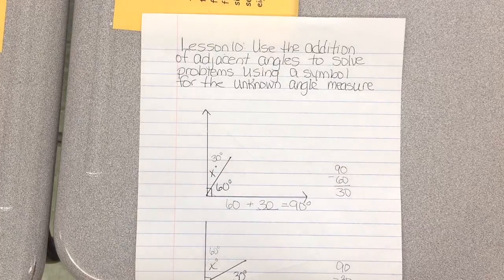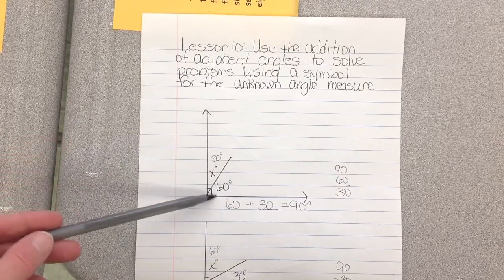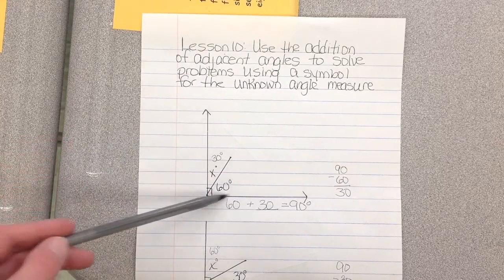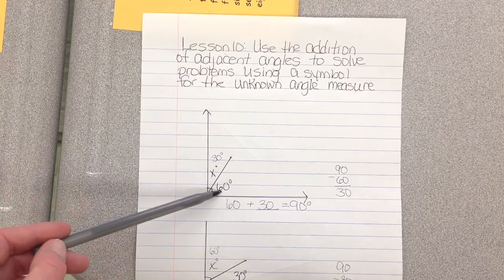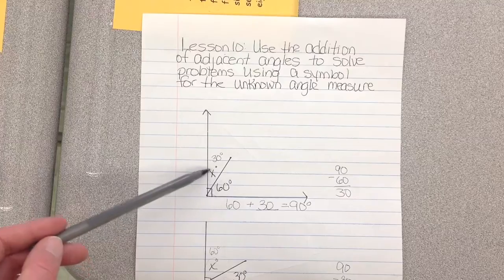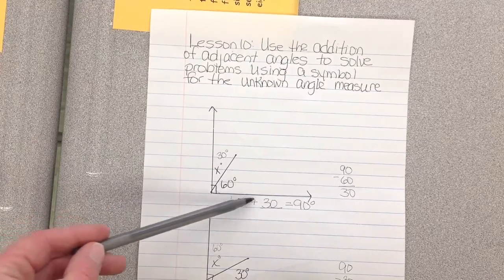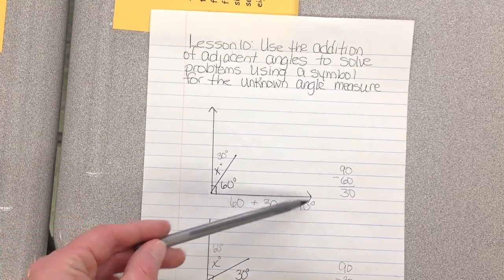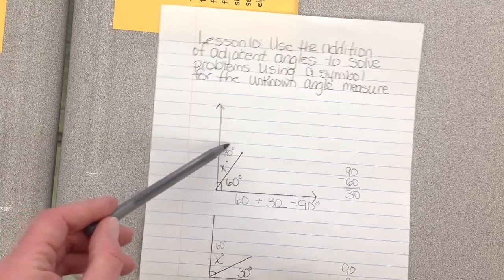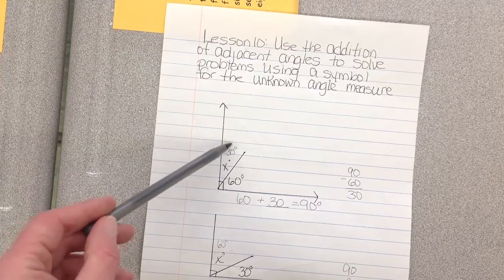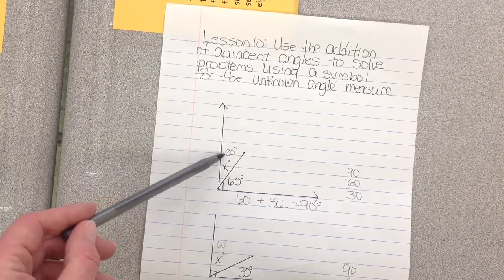Alright, we have an angle right here. By looking at it, we know that the entire angle equals 90. If you notice, this part is 60 and we have an X right here. Well, 60 plus something is 90. So I subtracted over here, 90 minus 60 is 30. So the X, we didn't know this one, but we went ahead and solved it, it's 30.